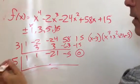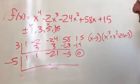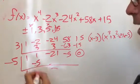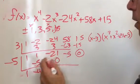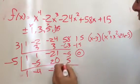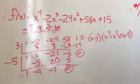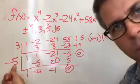I'll try negative 5. Bring it down, multiply, add, multiply, oh, that looks good, add, multiply, that worked. Good. So, I basically factored out an x plus 5.